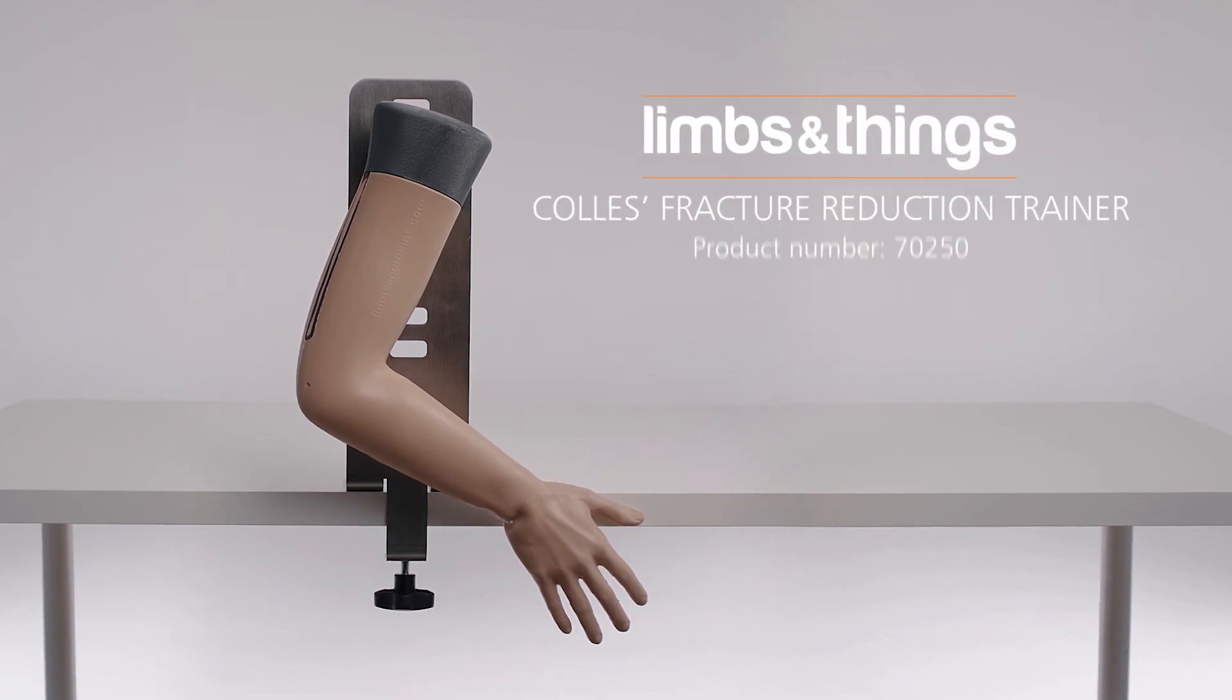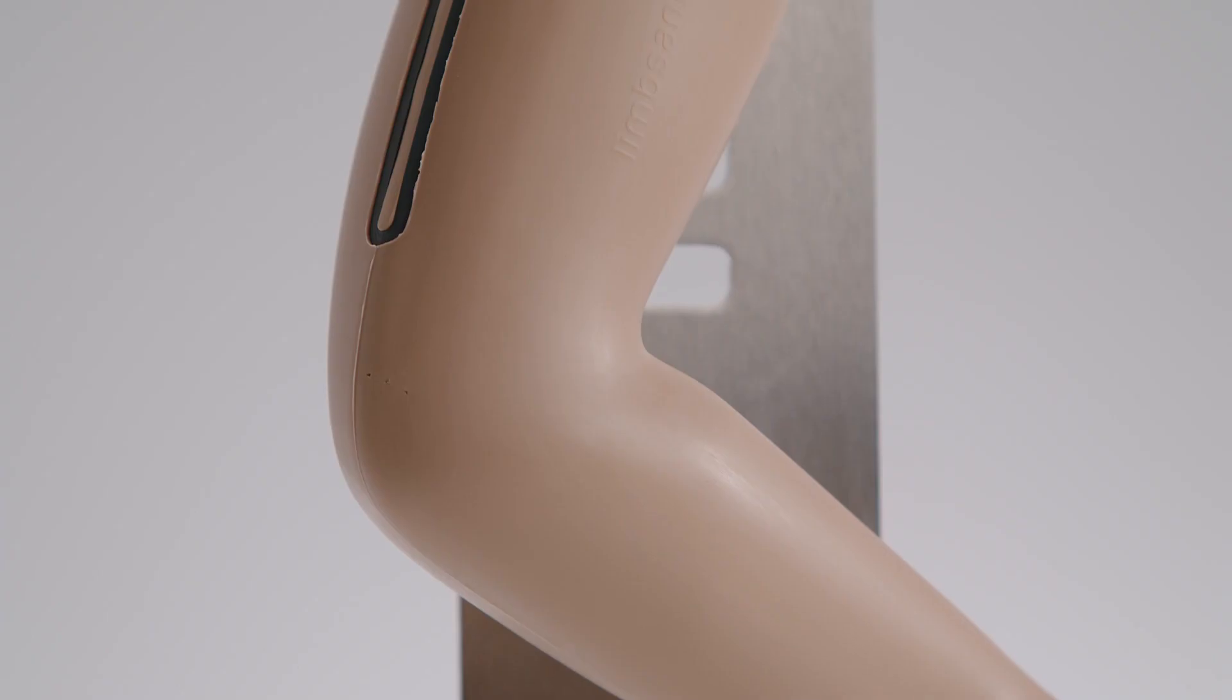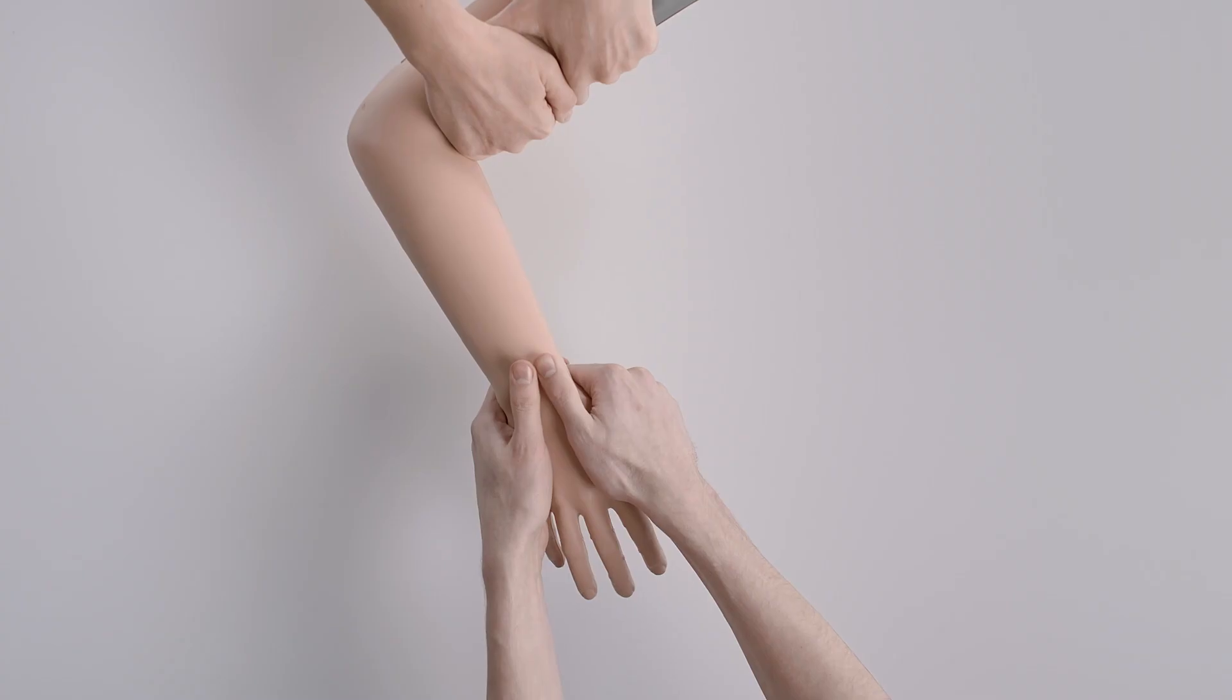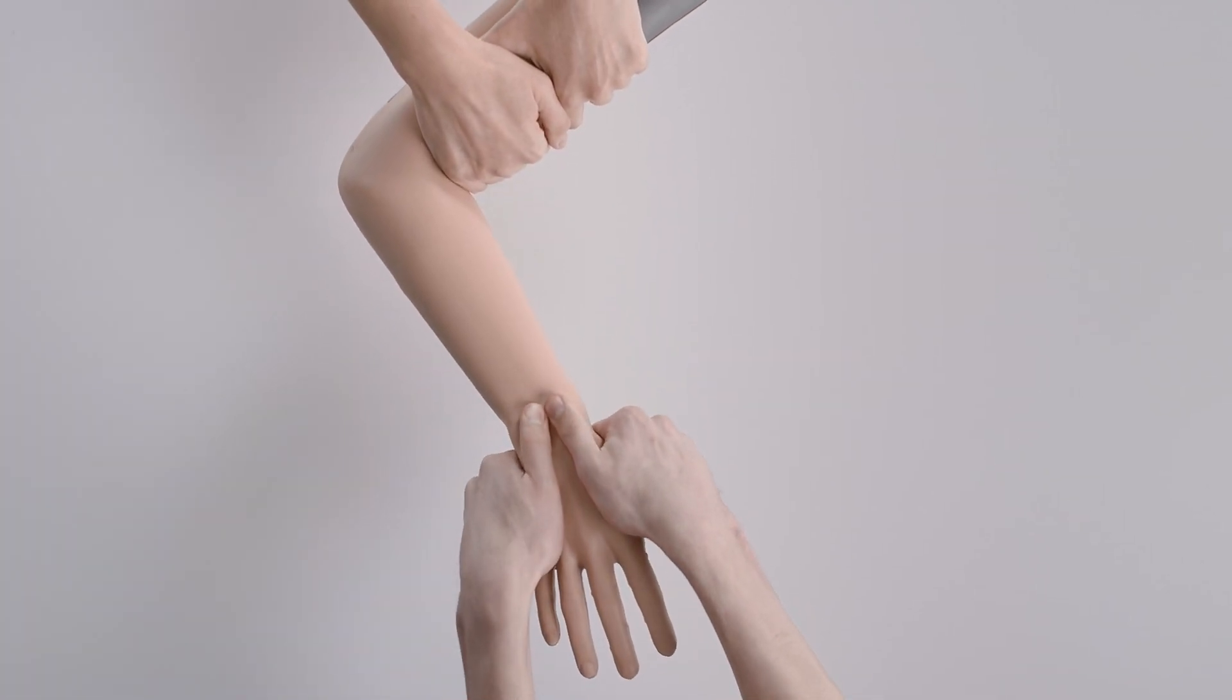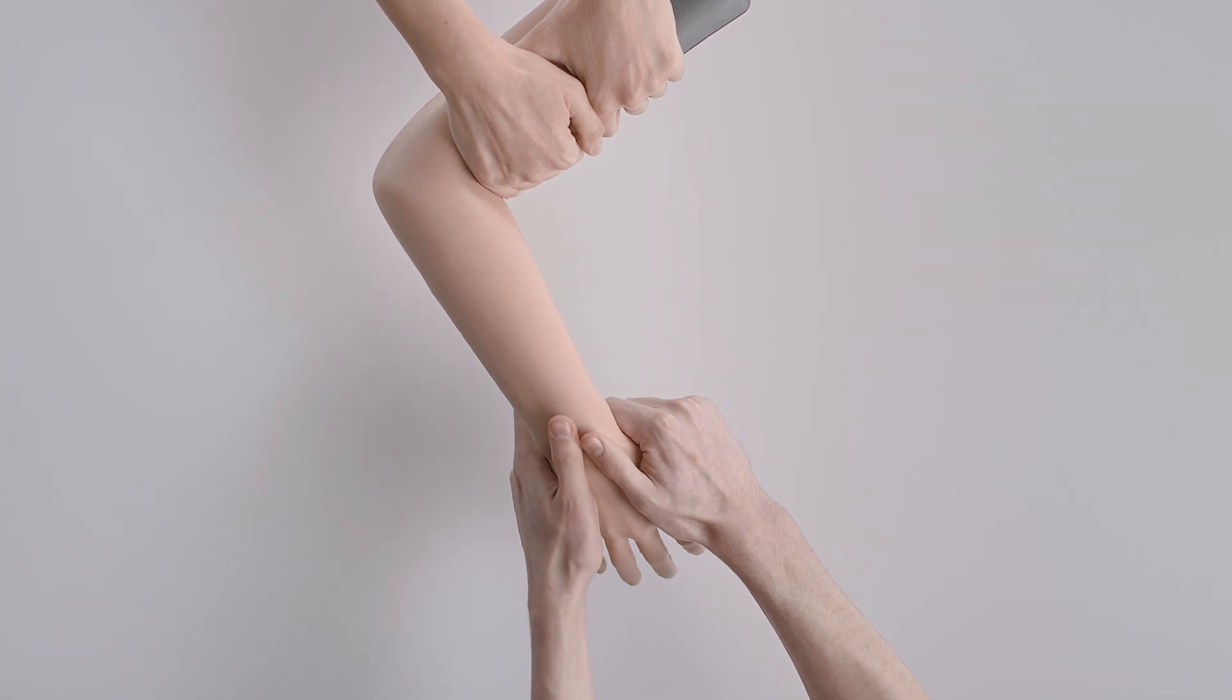This is the Limbs and Things Collie's Fracture Reduction Trainer, an anatomically accurate arm which supports trainees to gain confidence associated with successful management of Collie's fracture.